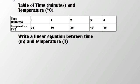Let's take a look at another example. Here I have a table of time and temperature. What I want to do is write a linear equation between the time, m, and the temperature, T. So maybe what I would do first is take a look at the table. I see at 0 minutes the temperature is 25, at 1 minute it's 30. So I see it's increasing here.